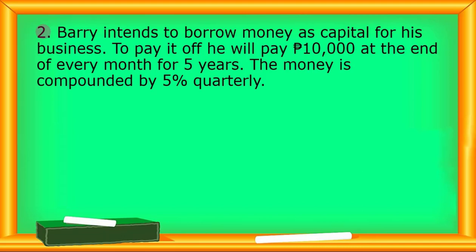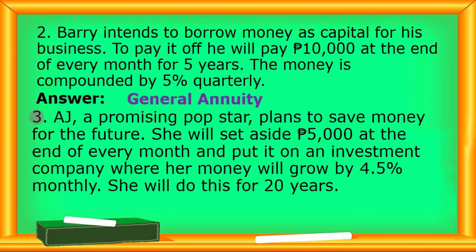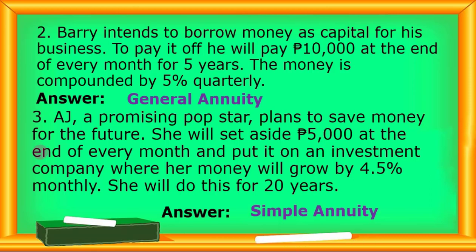Number two: Barry intends to borrow money as capital for his business. To pay it off, he will pay 10,000 pesos at the end of every month for five years. The money is compounded by 5% quarterly. The payment interval is monthly and the compounding period of the interest rate is quarterly — they are not the same, so this is a general annuity. For number three: AJ, a promising pop star, plans to save money for the future. She will set aside 5,000 pesos at the end of every month in an investment company where her money will grow by 4.5% monthly, for 20 years. The payment interval is monthly and the interest period is monthly — so it's a simple annuity.